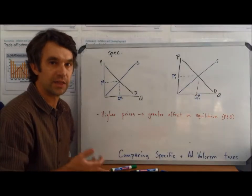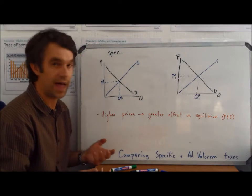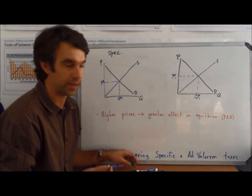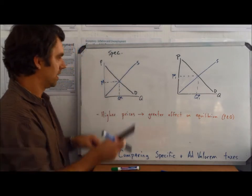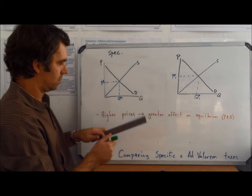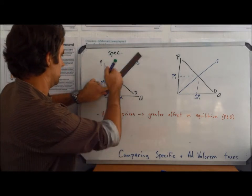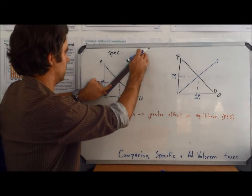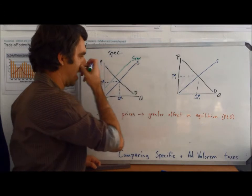Next we need to look at the effect that a specific or an ad valorem tax will have on the equilibrium inside of the market. So if we start with a specific tax here, and we're going to have a shift by the width of my ruler, however much that is, so this is going to be supply with tax.